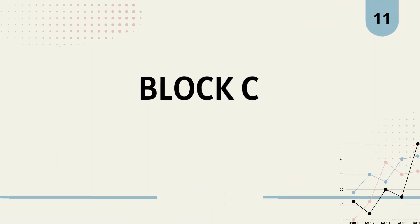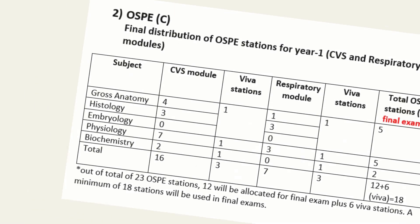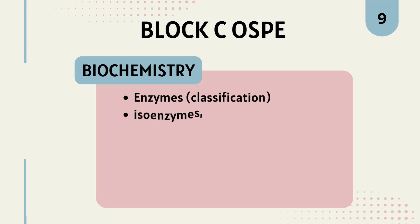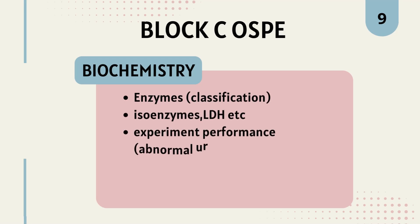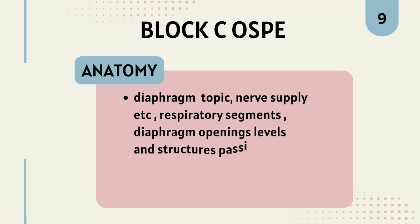Now let's move on to Block C. For biochemistry, enzyme classification, isoenzymes, LDH, etc. are important, and your experiment performance matters — especially for abnormal results. For anatomy, the diaphragm topic is very important, including its nerve supply, respiratory segments, diaphragm opening levels, and the structures passing through them.